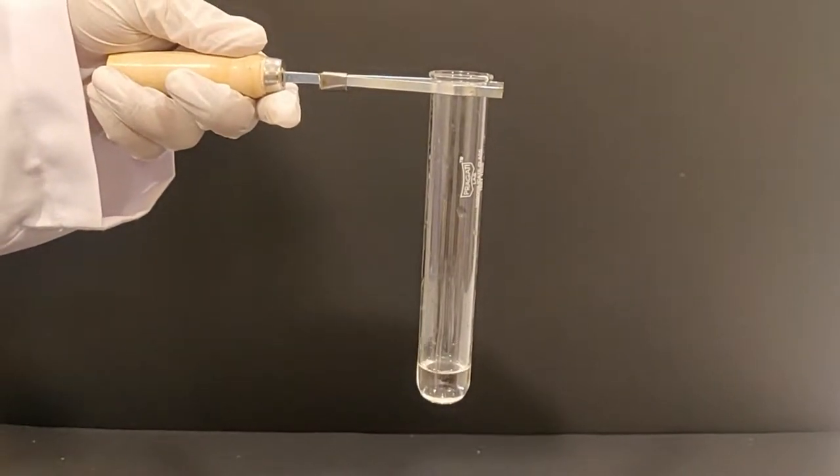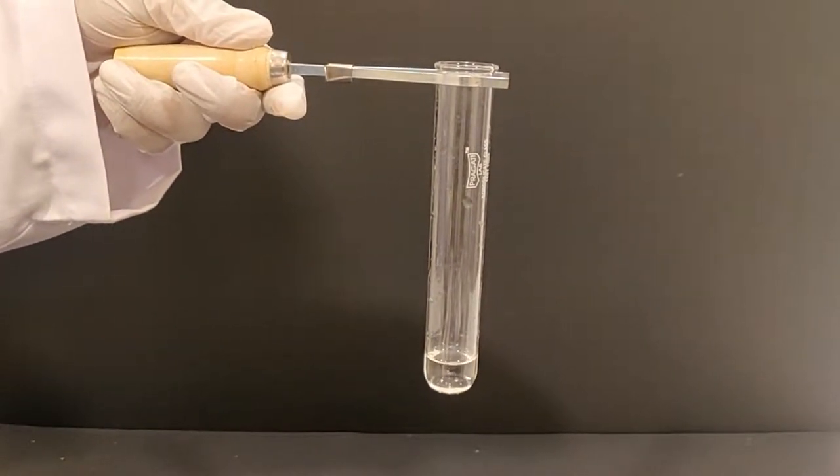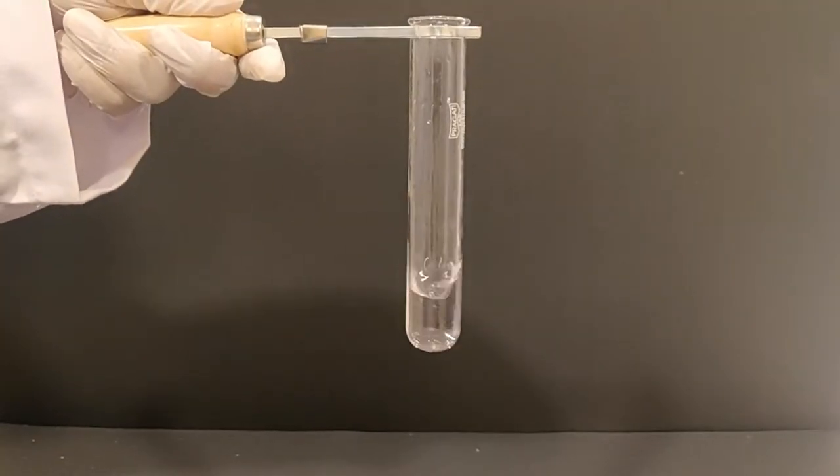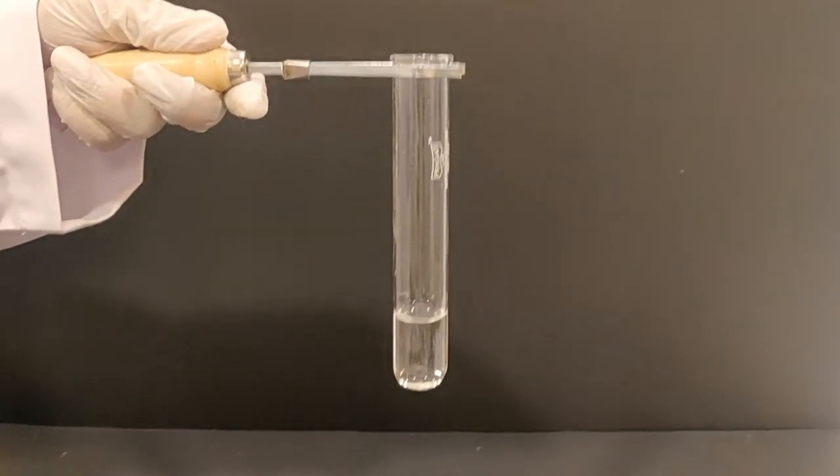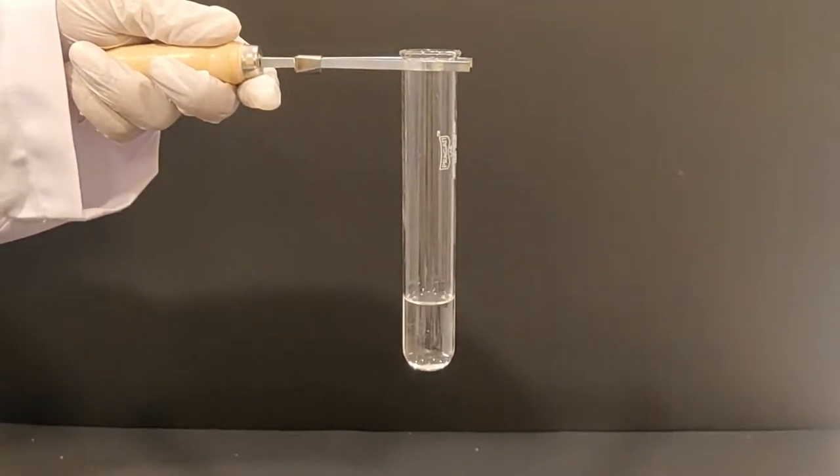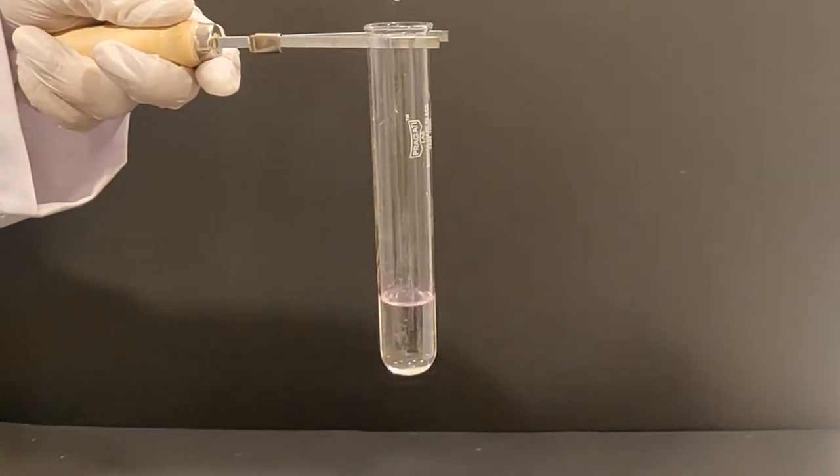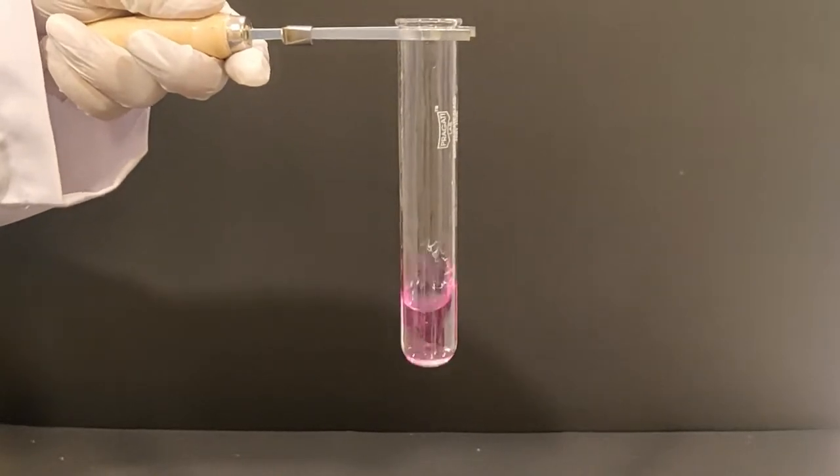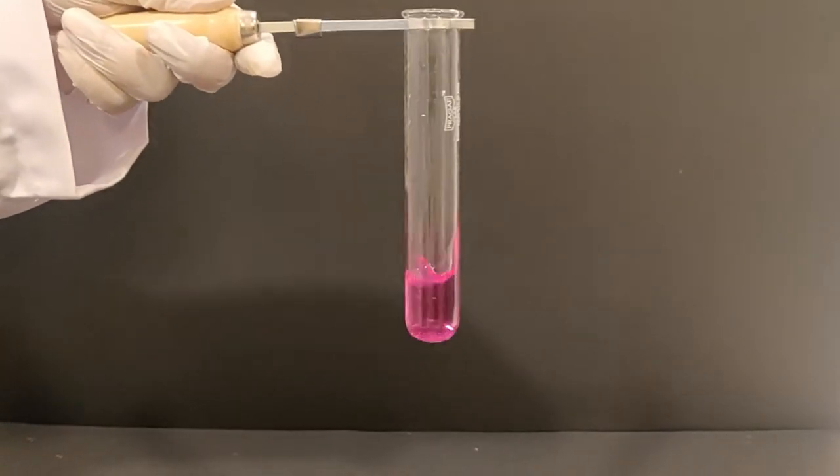Keep checking for any color change in the contents of the test tube. After a few additions, the color of the liquid in the test tube will turn pink. This is the phenolphthalein indicator at work.